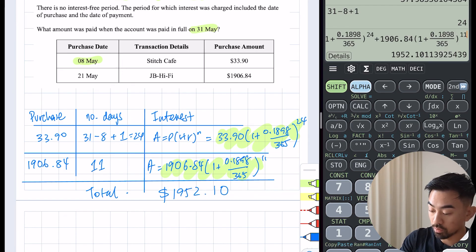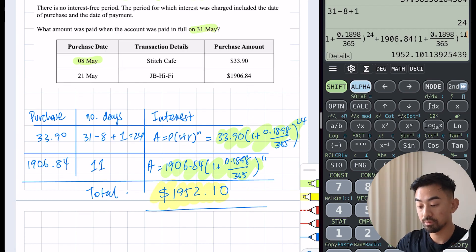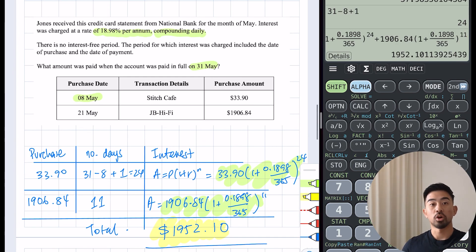Hope that helped. Just remember there's a few things: one, know your months; two, is it simple or compound; and then lastly, do you include the day of purchase and the day of payment or not. I'll put the notes down in the description. If there's any other things you'd like to see from me, just let me know. Hope that helped and I'll see you in the next one. Thanks.